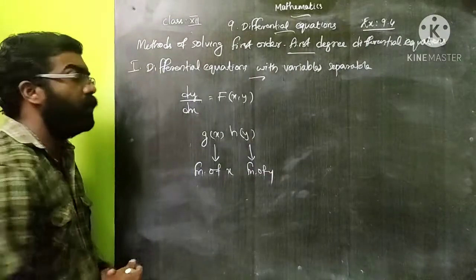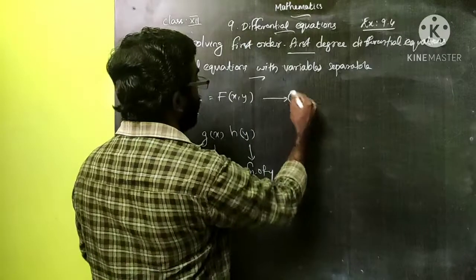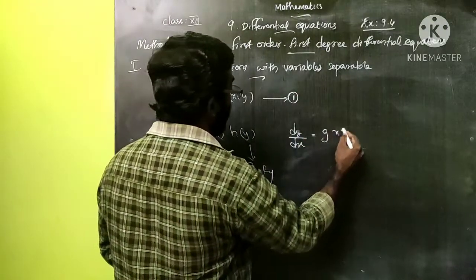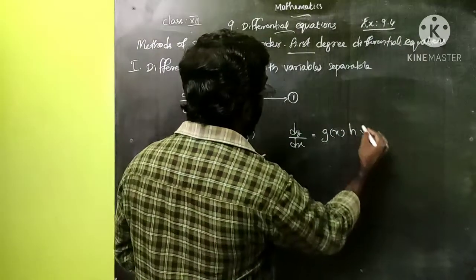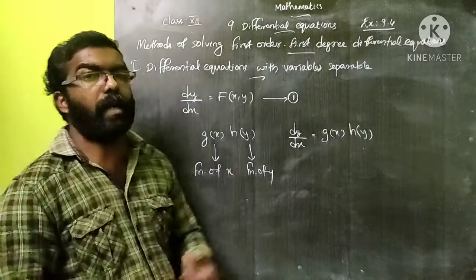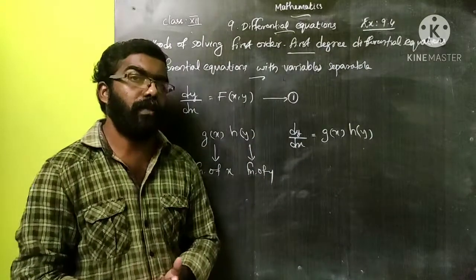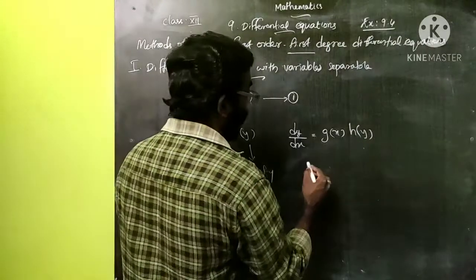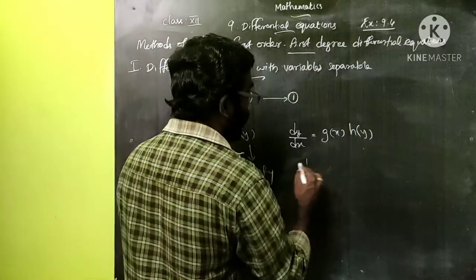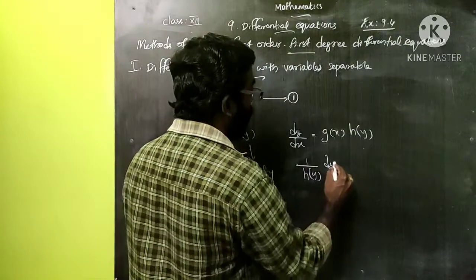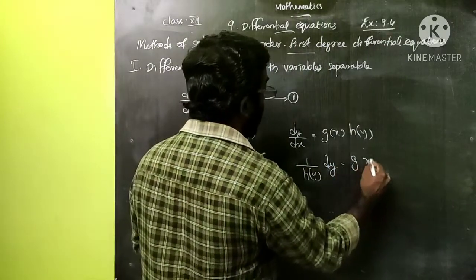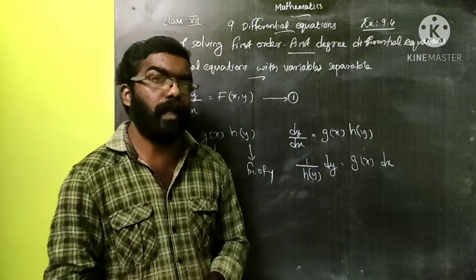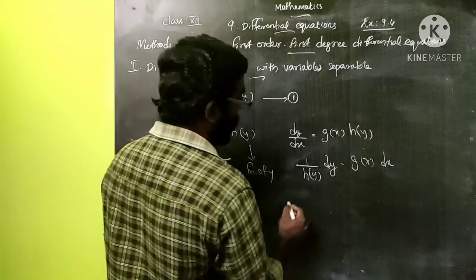Then we can reduce this equation as dy/dx = g(x)·h(y). Now we can collect the y terms to the left side and x terms to the right side, that means we can take h(y) to the left side: 1/h(y) dy = g(x) dx. To find the solution in this case we are going to integrate on both sides.